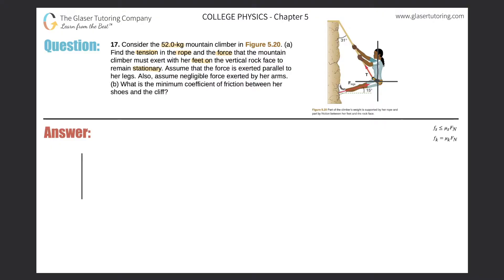The tension force is a force acting on her by the rope. Those are the critical forces — forces acting on the climber, not by the climber. This angle here is going to be 31 degrees. It matches this particular angle because if you have two parallel lines, the angle in here matches the angle in here — that's like the alternate angle theorem.